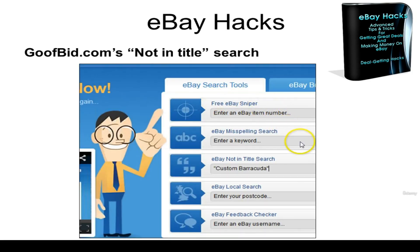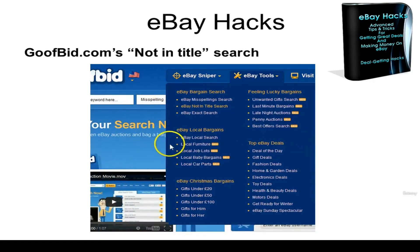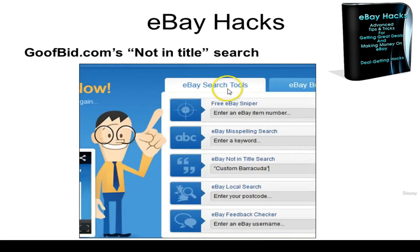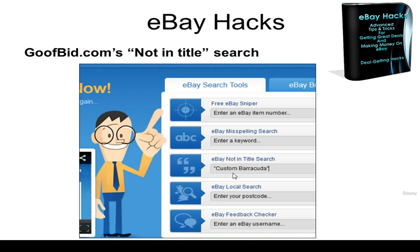Another way to access it is to go to the main site where you'll see eBay Search Tools listed just below. In the eBay not-in-title search, I'm typing 'custom Barracuda' in quotation marks, because I want both words to be present in the search. I'm telling GoofBid to search eBay's listings — but don't search the titles, only search the descriptions — for my search phrase, 'custom Barracuda.'